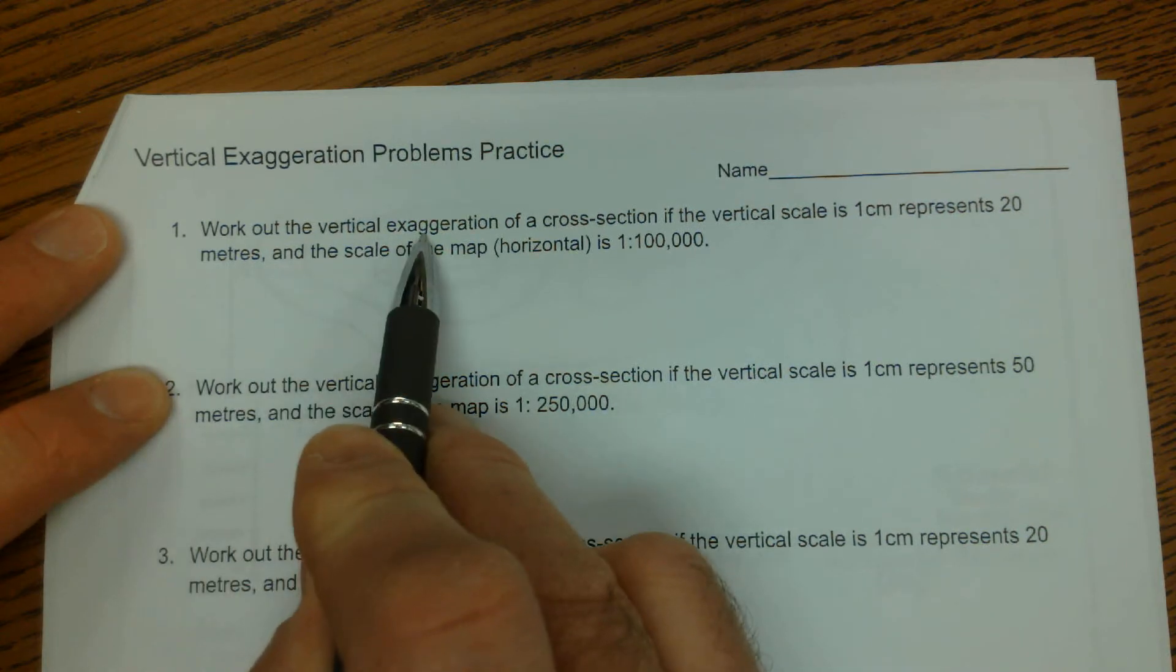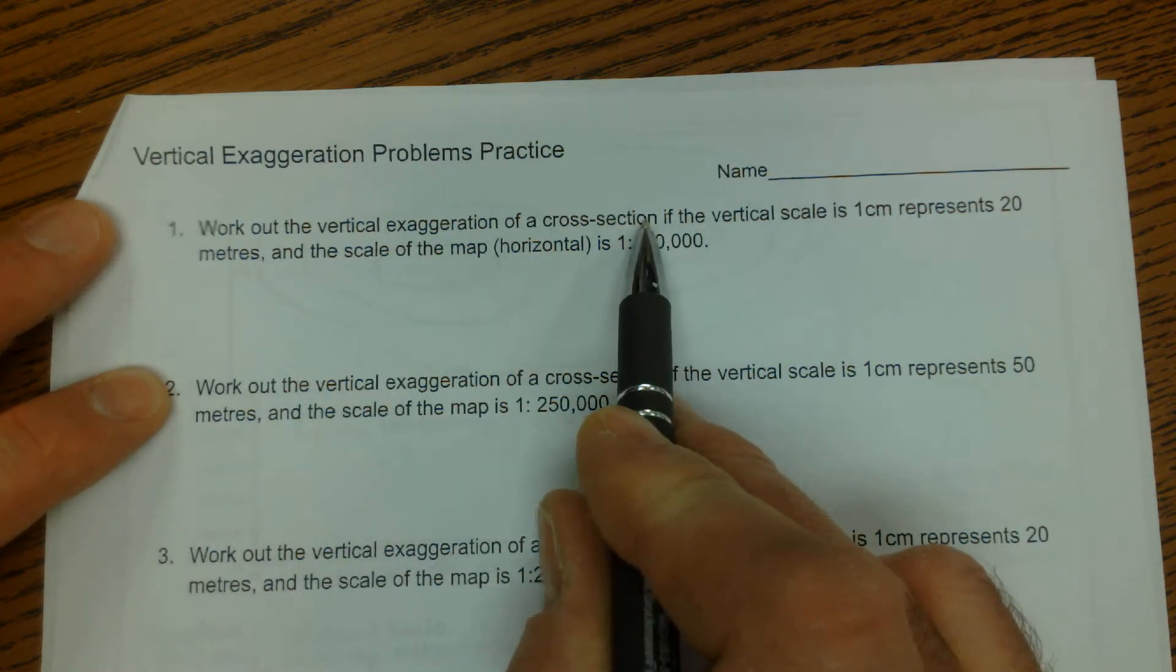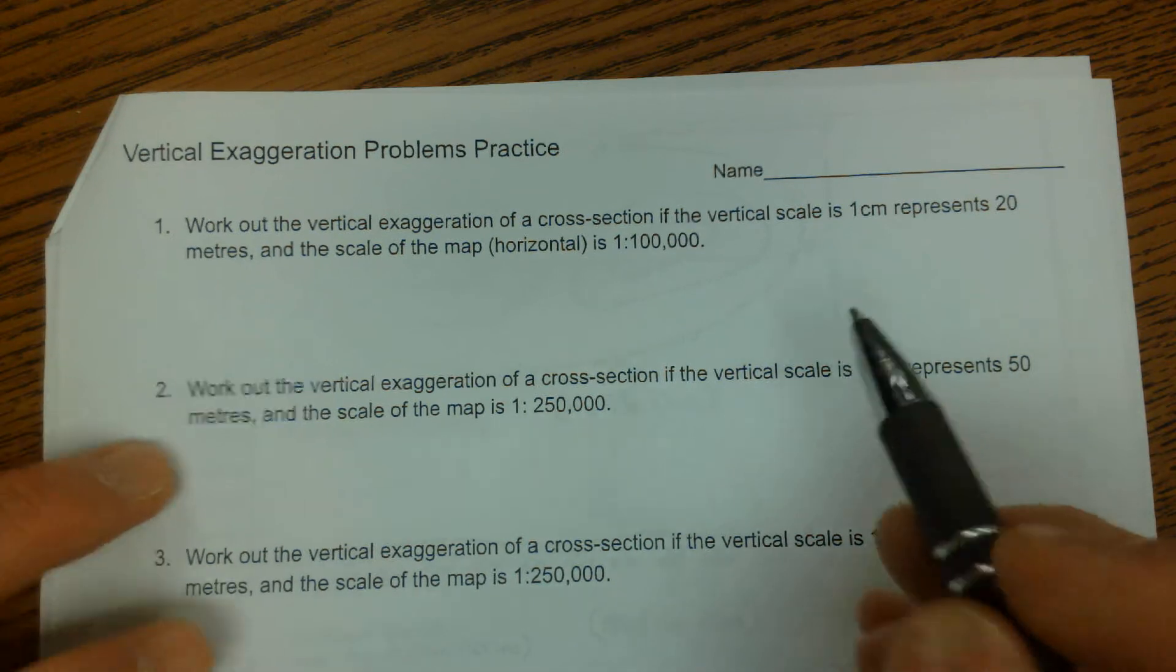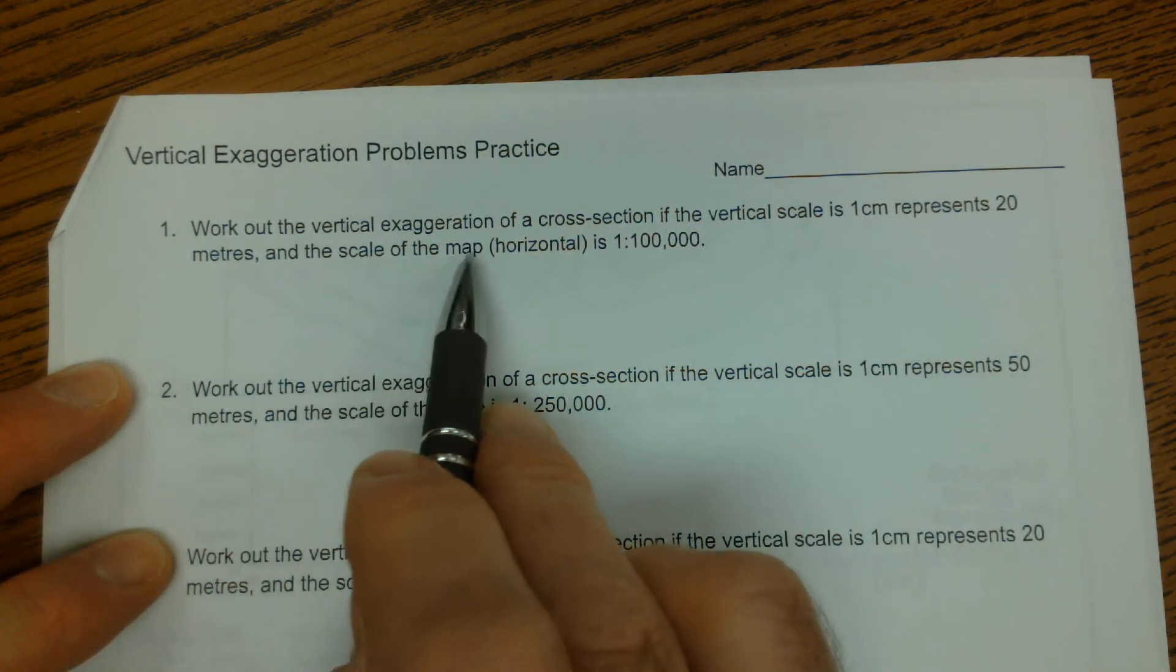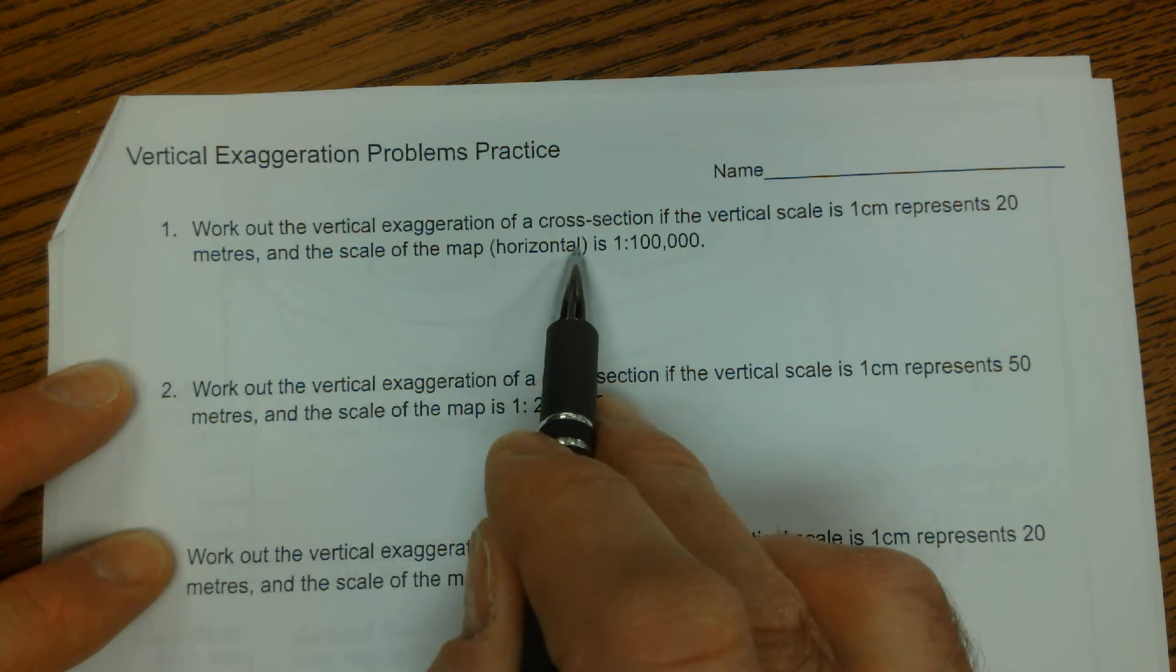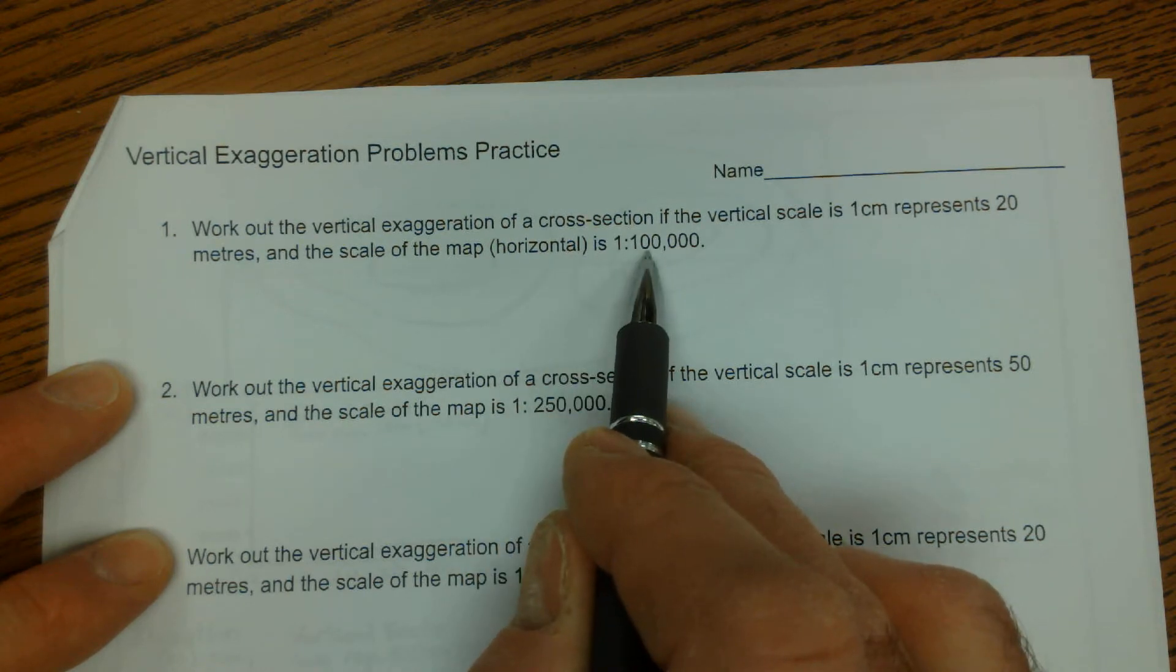This says work out the vertical exaggeration of a cross section if the vertical scale is 1 centimeter represents 20 meters and the scale of the map, which is the horizontal scale, is 1 to 100,000.